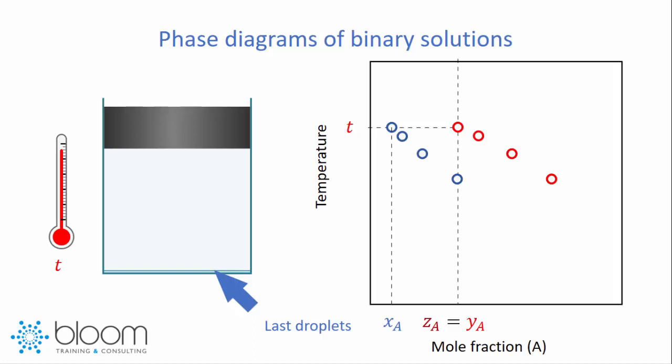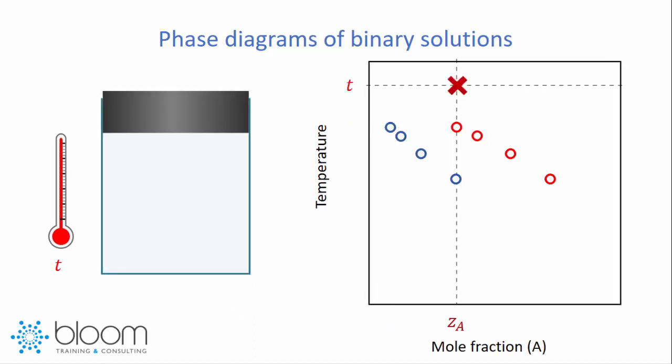Now if we add even more heat, the last few droplets are going to vaporize, and we are going to end up in a system composed only of one vapor phase. Notice that by setting the mole fraction of A in our system to a fixed value ZA, and by gradually increasing the temperature t, we were able to obtain a series of points.